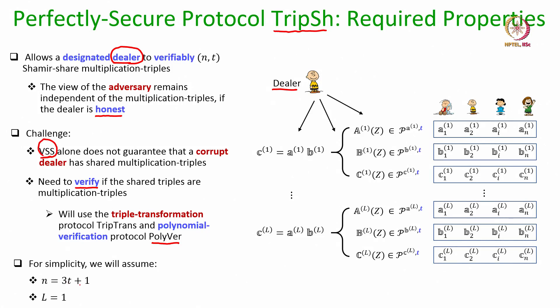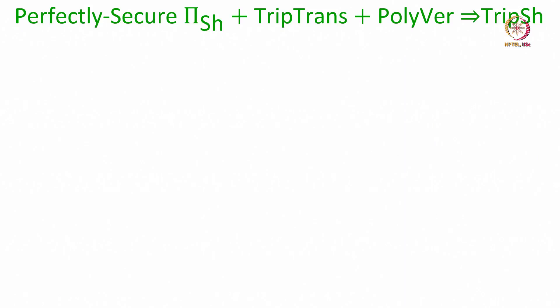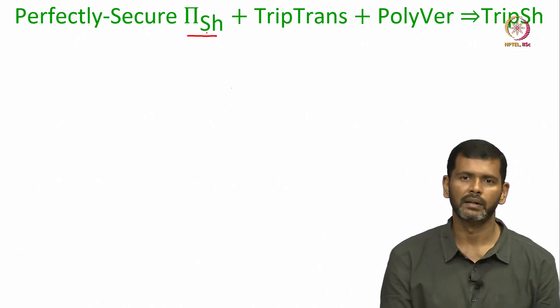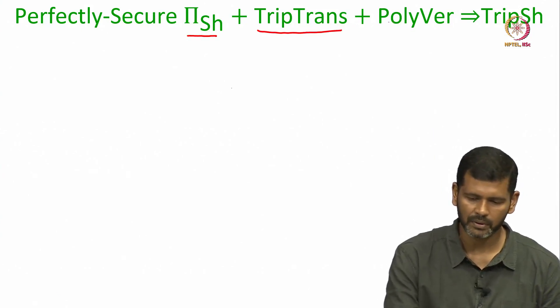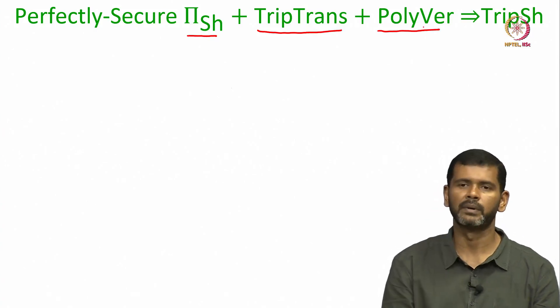For simplicity, I will assume n equals 3t plus 1, which is the smallest value of n satisfying the condition t less than n over 3. Remember, this is the optimal resilience for any generic perfectly secure multiparty computation protocol. Also, for the sake of demonstration, I will explain the protocol assuming that the dealer wants to verifiably secret share only one multiplication triplet. Of course, if the dealer wants to secret share more than one multiplication triplet, the protocol steps can be executed in parallel.